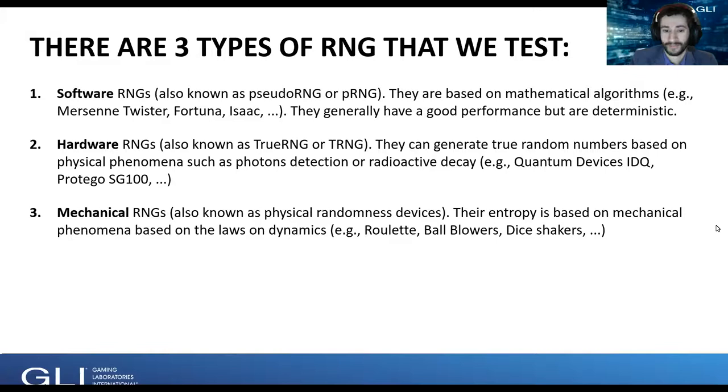Hello. Hi, Marina. Thanks for introducing me. So pleased to be here today. So, well, a random number generator is a computer system or device that provides random results for games. Most countries in the world require an independent test lab, such as GLI, to assert that the RNG is suitable for gaming applications. Here at GLI, we have a very long experience of testing RNGs and have developed lists of requirements known as GLI standards that are accepted in many unregulated markets.